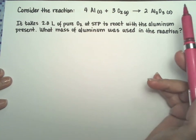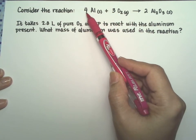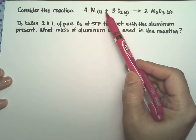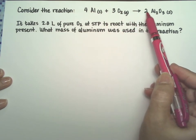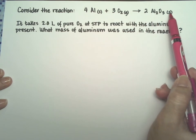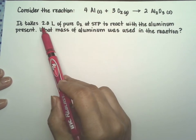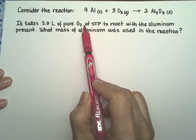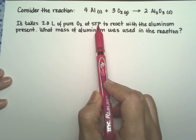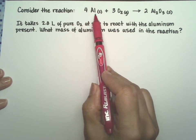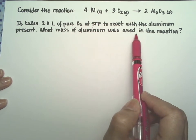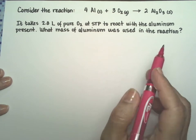For this problem we're going to consider the reaction of four moles of aluminum reacting with three moles of oxygen gas forming two moles of aluminum oxide. It takes two liters of pure oxygen at standard temperature and pressure, STP, to react with the aluminum present in the reaction. What mass of aluminum was used in the reaction to begin with?